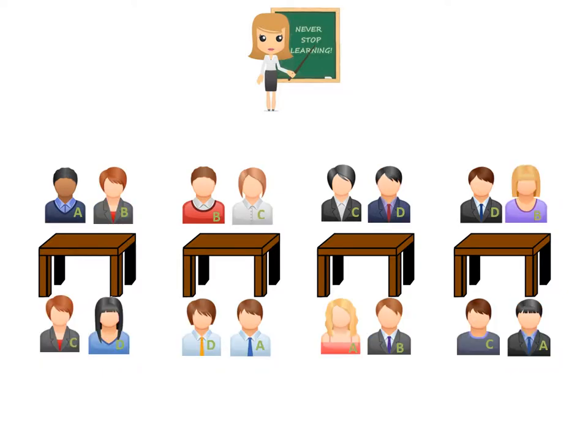Then you split them up so everyone's with a different person. You can see now that the first group has an A, B, C, and D. The second group has B, C, D, and A, and so on and so forth.